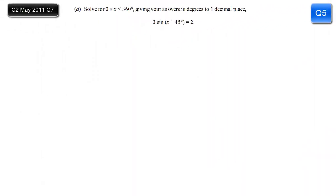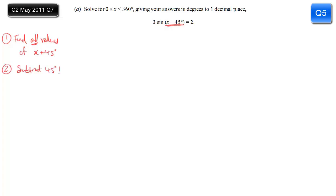This C2 question has two different trig equations. Part A: we're given a range of x in degrees, 0 to 360, and we have to solve the equation. The variable inside the trig function is x plus 45, not x. So first we're going to find all values of x plus 45 that fit our range, and only then subtract 45 to get the values for x. If x is 0 to 360, then x plus 45 is 45 to 405 degrees. We can divide by 3 to get sine(x + 45°) equals 2/3.